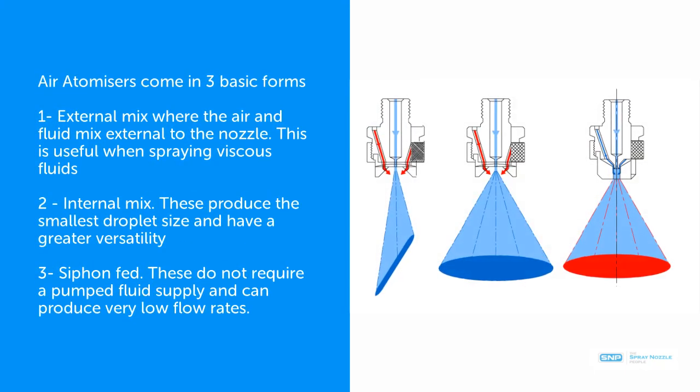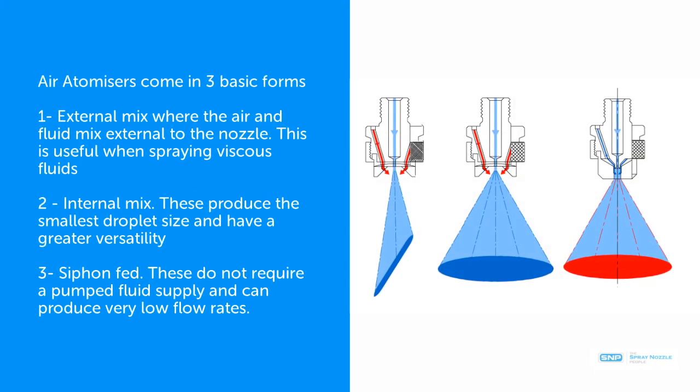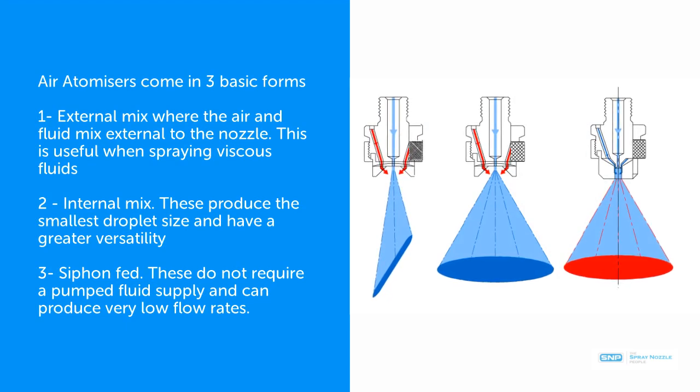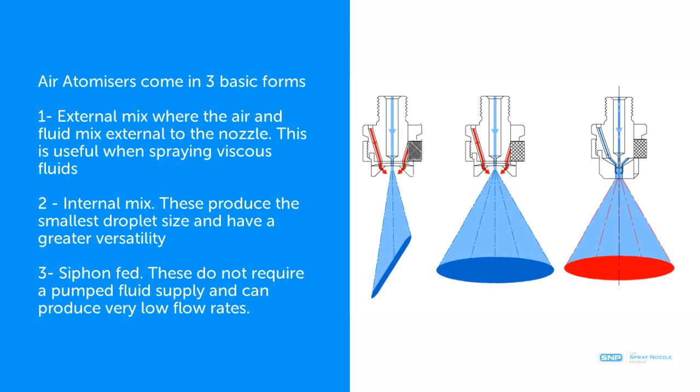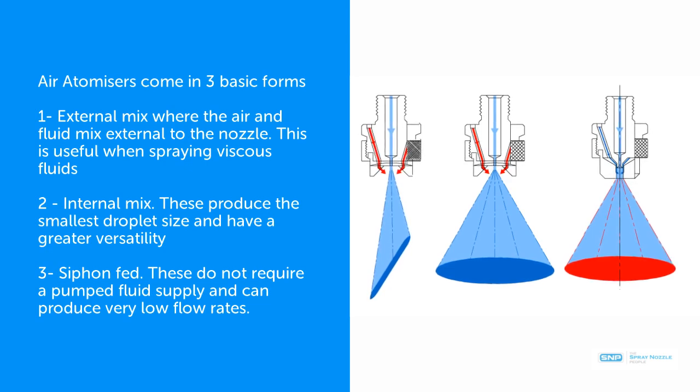Air atomizers come in three basic forms. External mix, where the air and fluid are mixed external to the nozzle. This is useful when spraying viscous fluids.